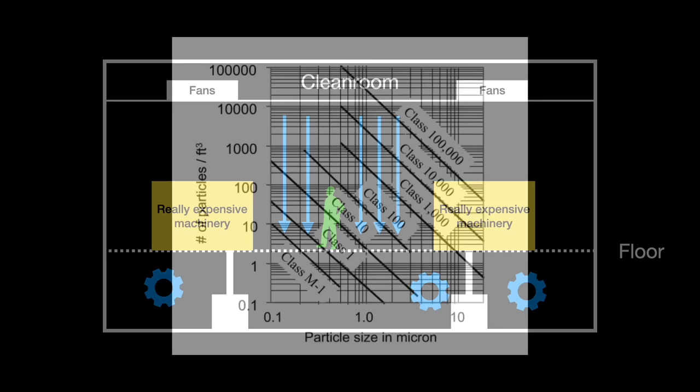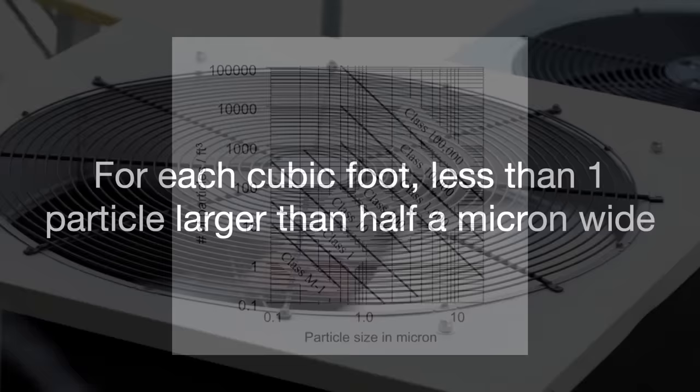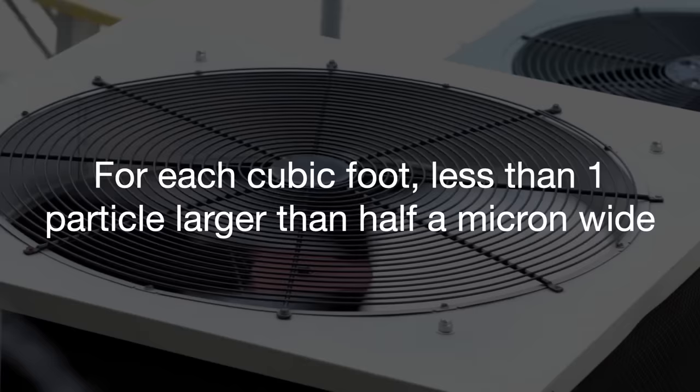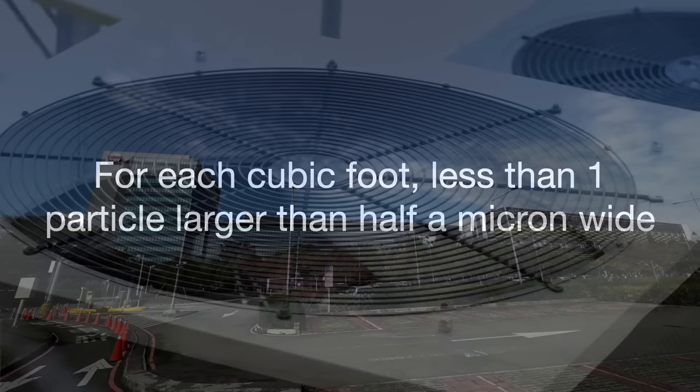The area is split into multiple classes of cleanliness: Class 10, 100, 1000, and so on. These classes are defined with a mix of metric and imperial units. Class 1 means for each cubic foot, there is less than one particle larger than half a micron wide; Class 10 means 10 particles, and so on. When the wafers are done, they are transferred to a lower-class cleanroom for testing and packaging — some fabs outsource this work to third parties, but a few do it in-house.